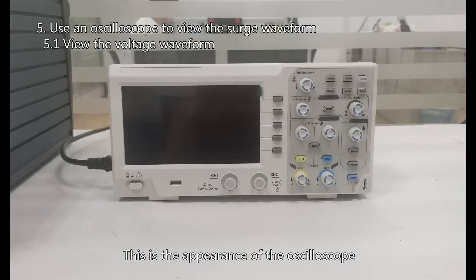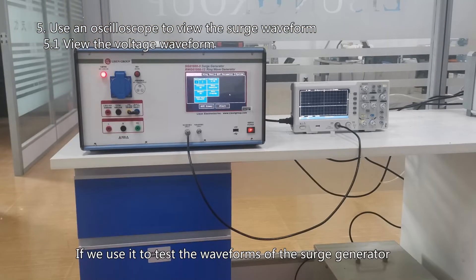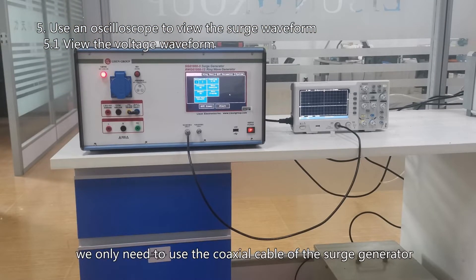This is the appearance of the oscilloscope. Here are the accessories. If we use it to test the waveforms of the surge generator, we only need to use the coaxial cable of the surge generator.